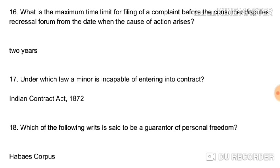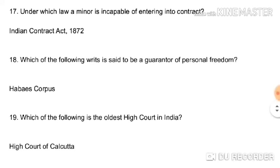For example, if you have purchased an air conditioner which is not functioning properly, you can move to the consumer protection forum against the dealer or company — but you must file the case within two years. This is the time limit prescribed under the Consumer Protection Act. Under which law is a minor incapable of entering into contract? The Indian Contract Act 1872 — the landmark case is Mohori Bibee versus Dharmodas Ghose, a very important judgment. Habeas corpus is said to be the guarantor of personal freedom.